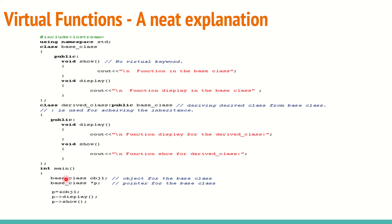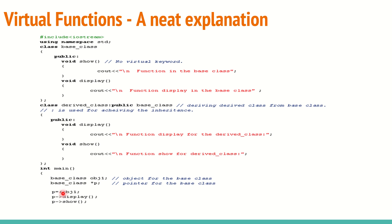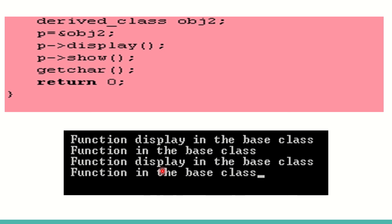I have a base class pointer P. I assign the address of the base class object to P, then call 'display' and 'show' — both base class functions are called correctly. I then create a derived class object, assign its address to P, and call 'display' and 'show.' The expectation is for the derived class versions to be called.